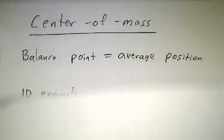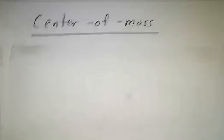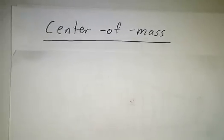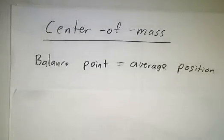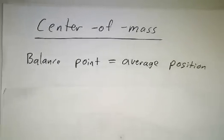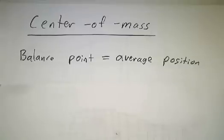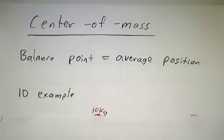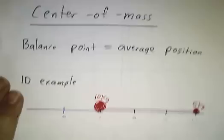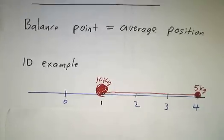The next thing we want to understand is center of mass. The center of mass of an object is the balance point — if you held something at the center of mass, it wouldn't tip to either side. It's also given by the average position of all the atoms in the mass, where by average I mean literally a weighted average.